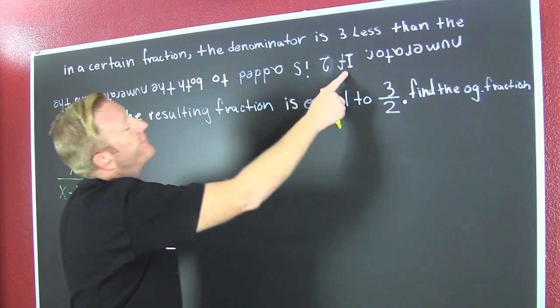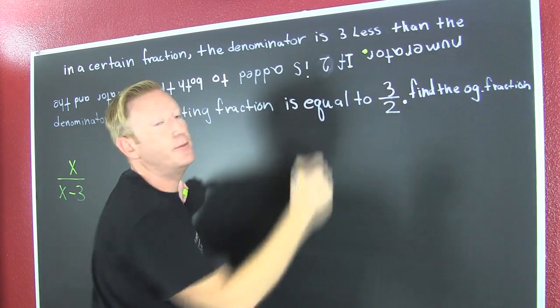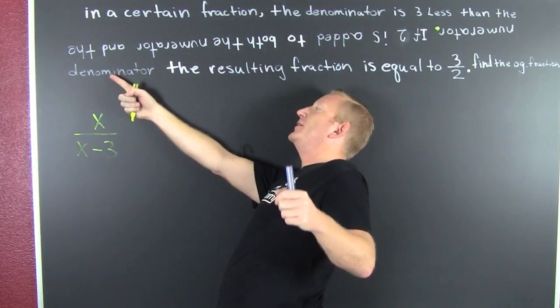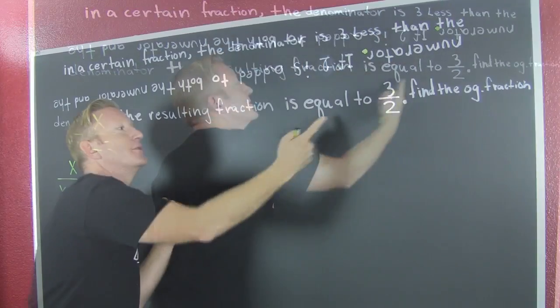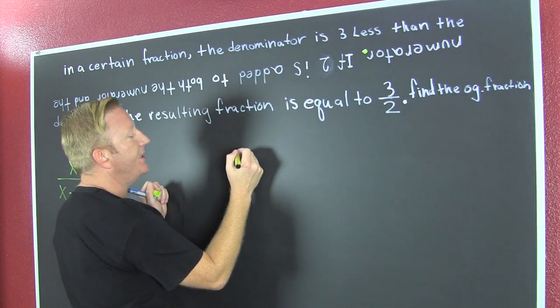Okay, so if... Now that's a completely different sentence. Now, if two is added to both the numerator and the denominator, the resulting fraction is equal to three halves. I have that here.